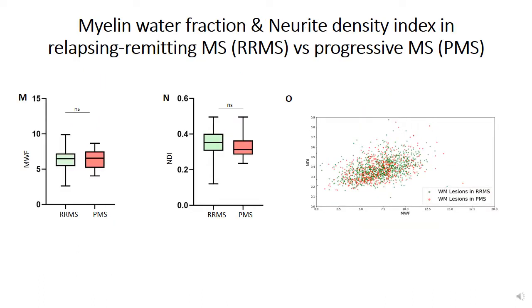Then, we asked whether there is a difference between patients with different MS clinical subtypes in terms of NDI and myelin water fraction in MS lesions. Our results showed that there is no significant difference between RRMS and progressive MS.